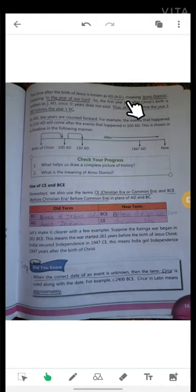AD meaning Anno Domini, in the year of our Lord. So the first year just after Christ's birth is written as 1 AD since year zero does not exist. Thus on the timeline, the year 1 AD follows the year 1 BC.